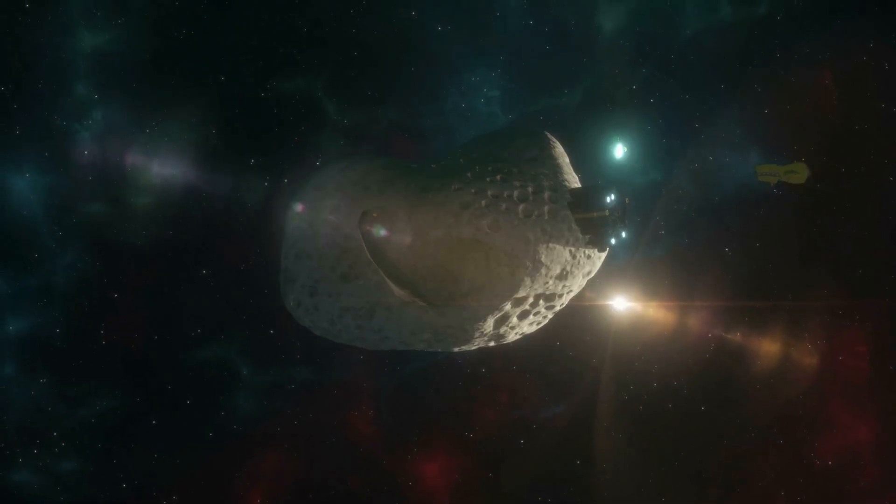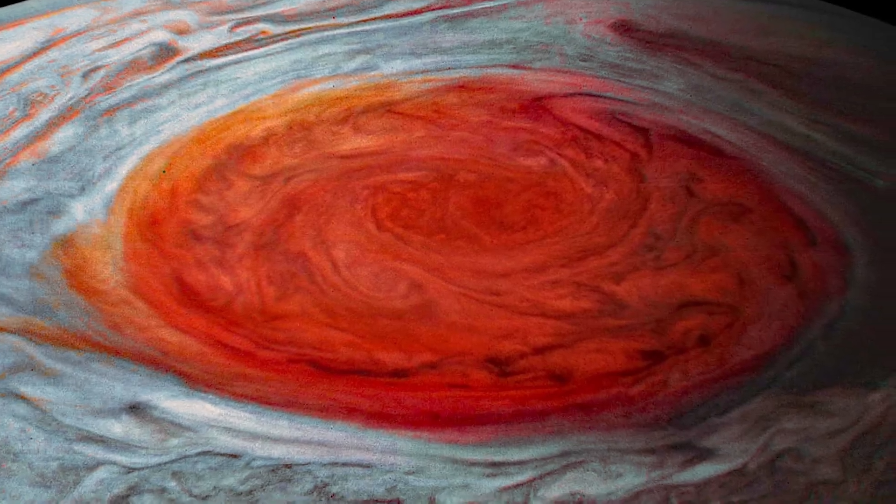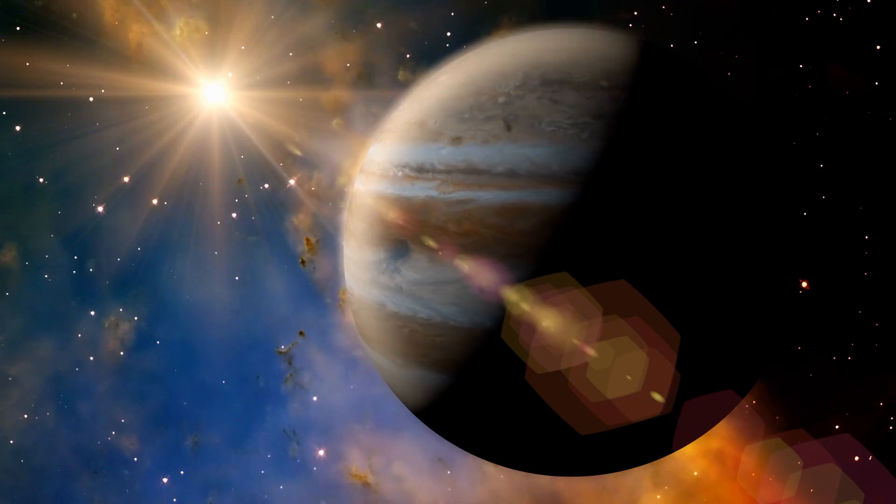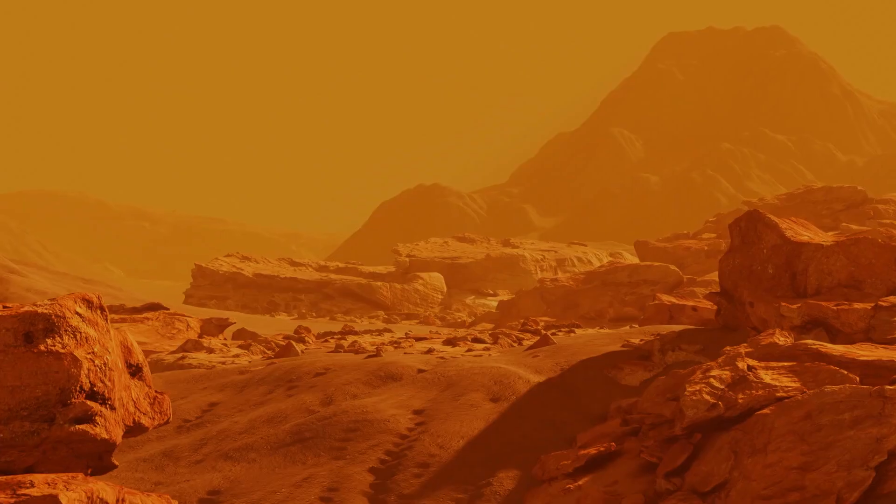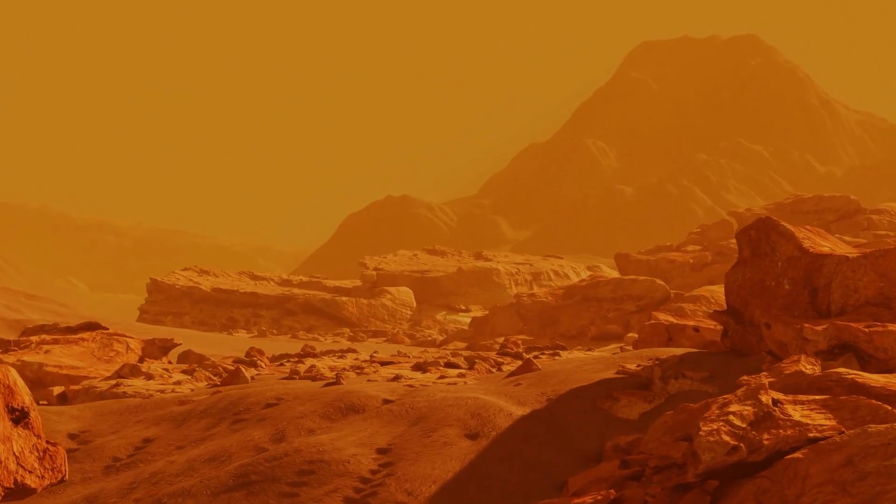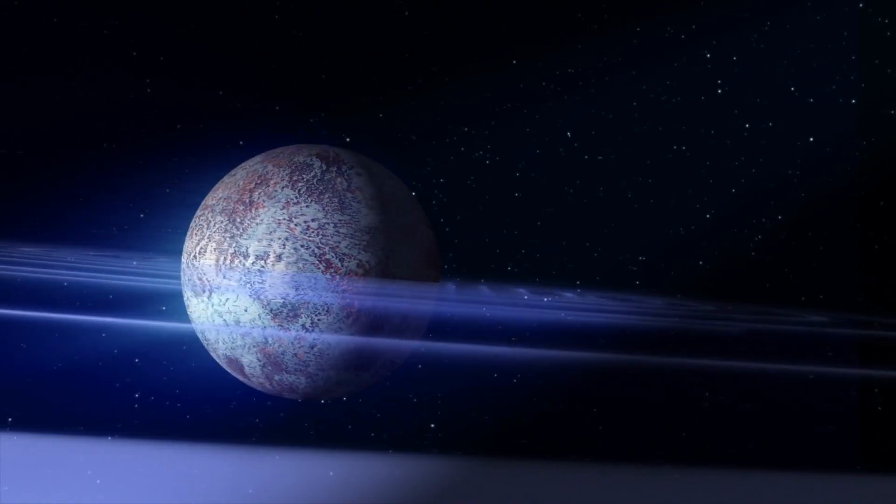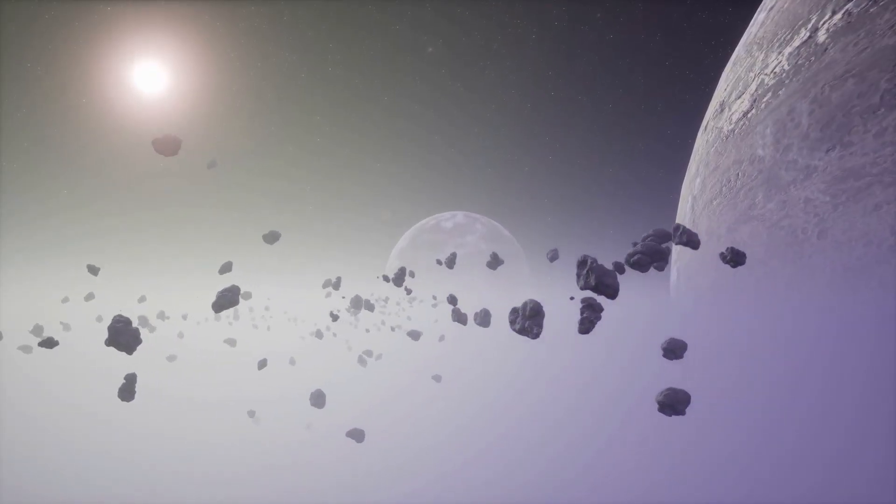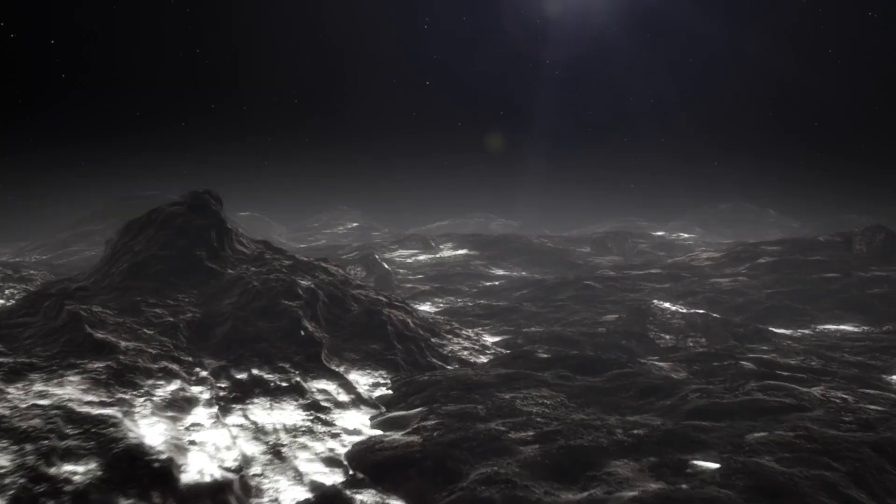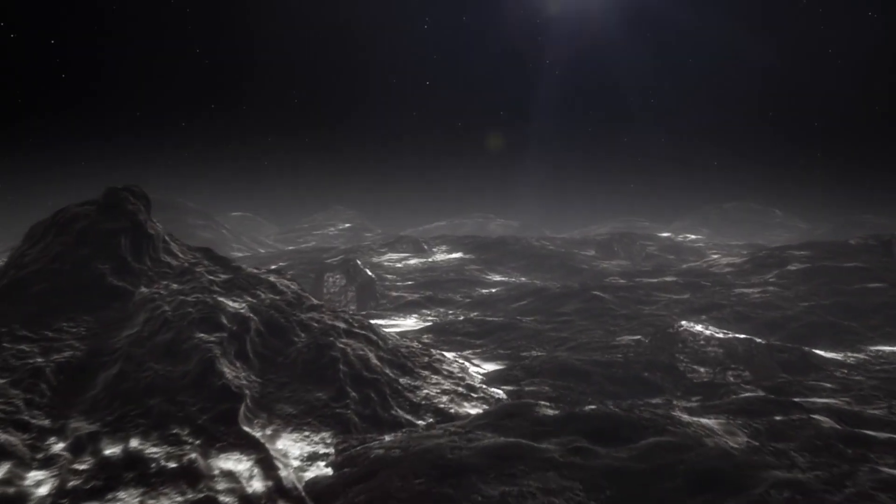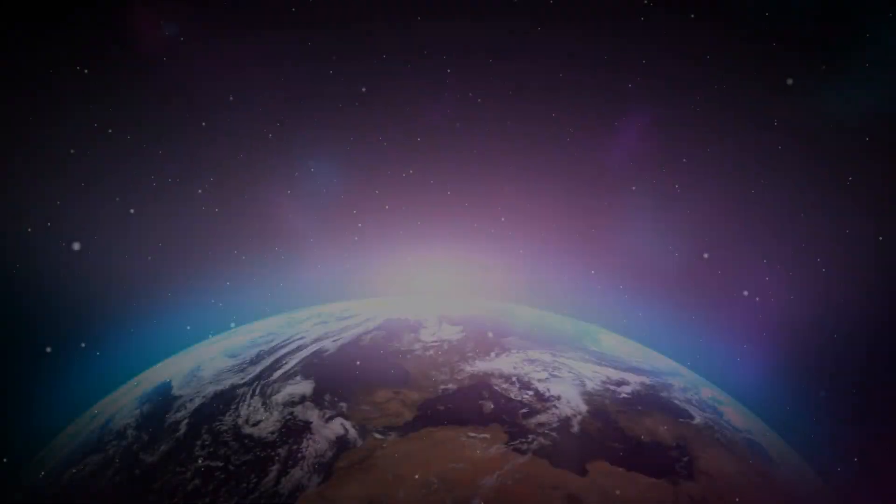We might find important clues regarding the planet's interior operations and function within our solar system when we examine its fundamental systems and structures. Even while they are not as noticeable as the Great Red Spot, these lesser storms give us a rare chance to research the intricate dynamics of Jupiter's atmosphere.